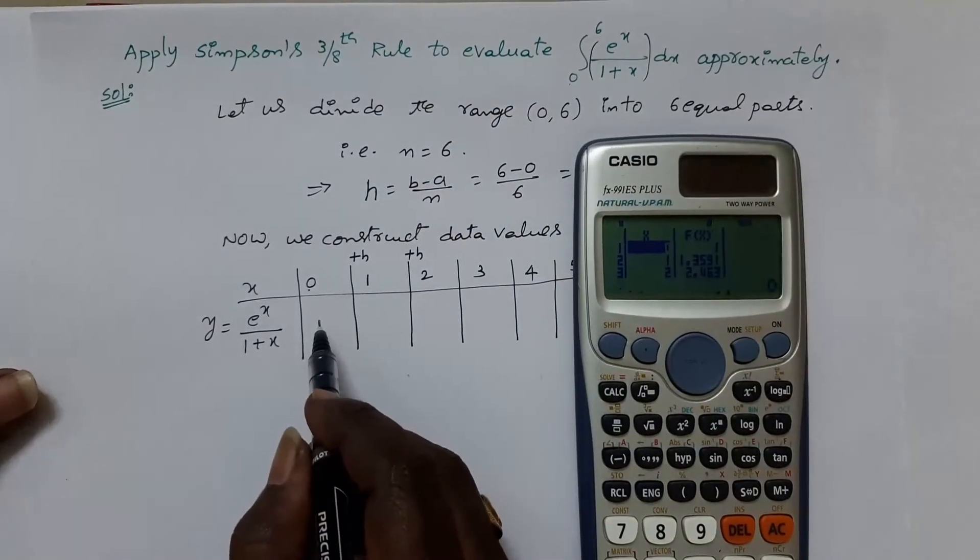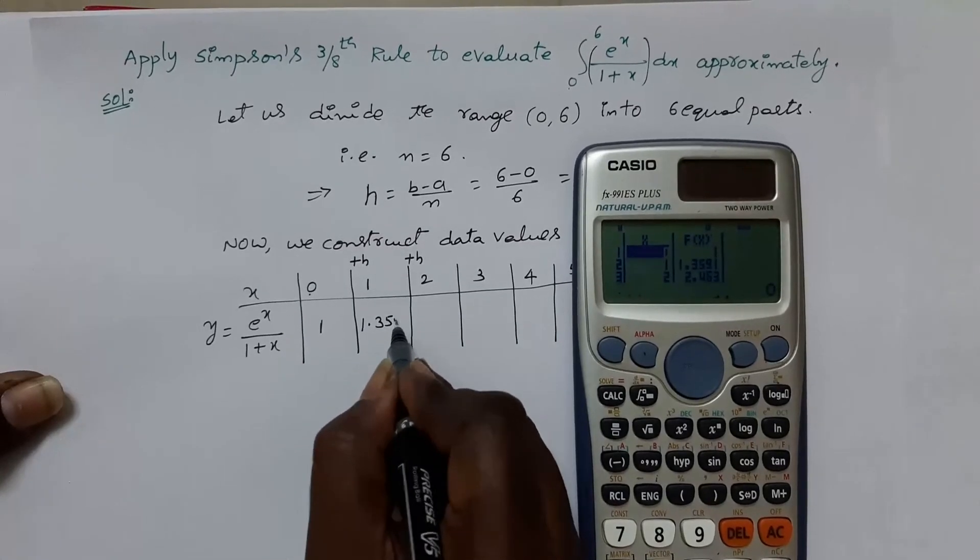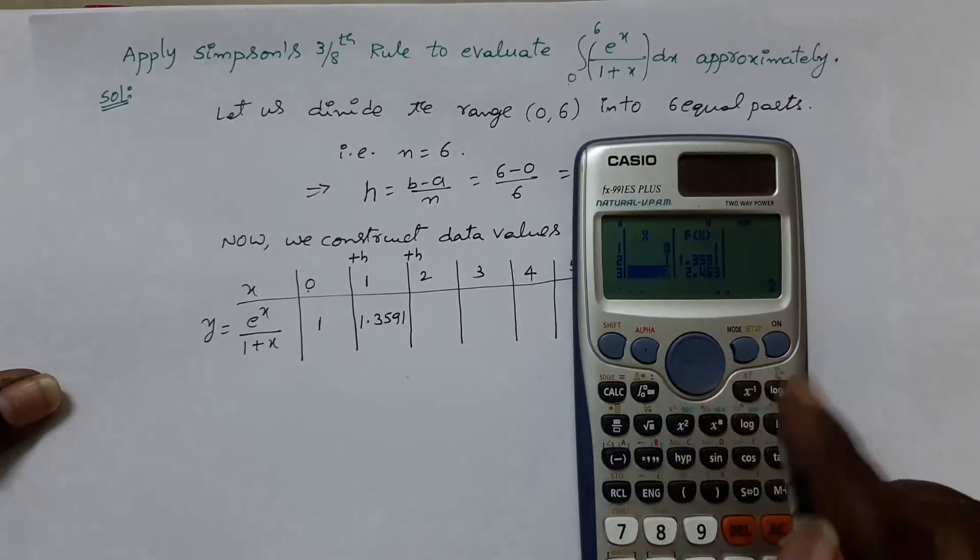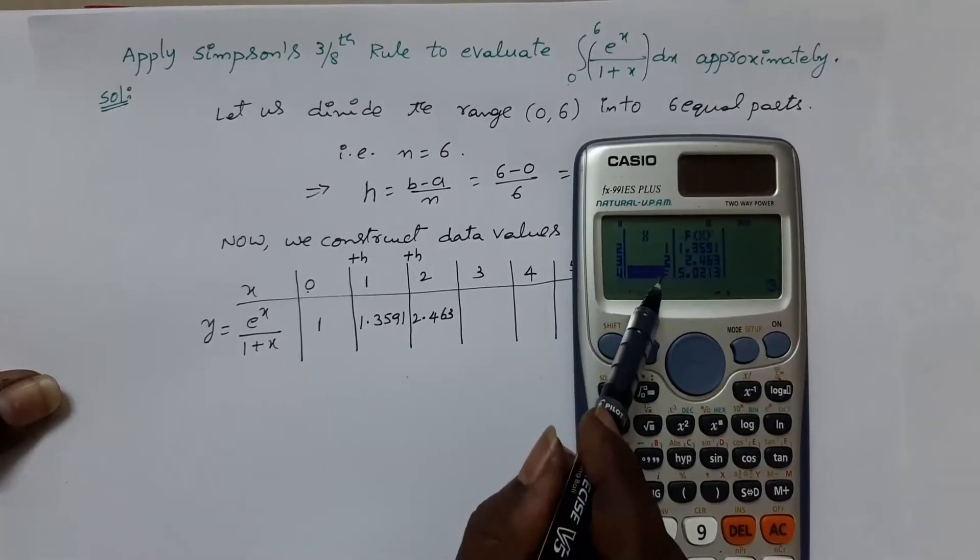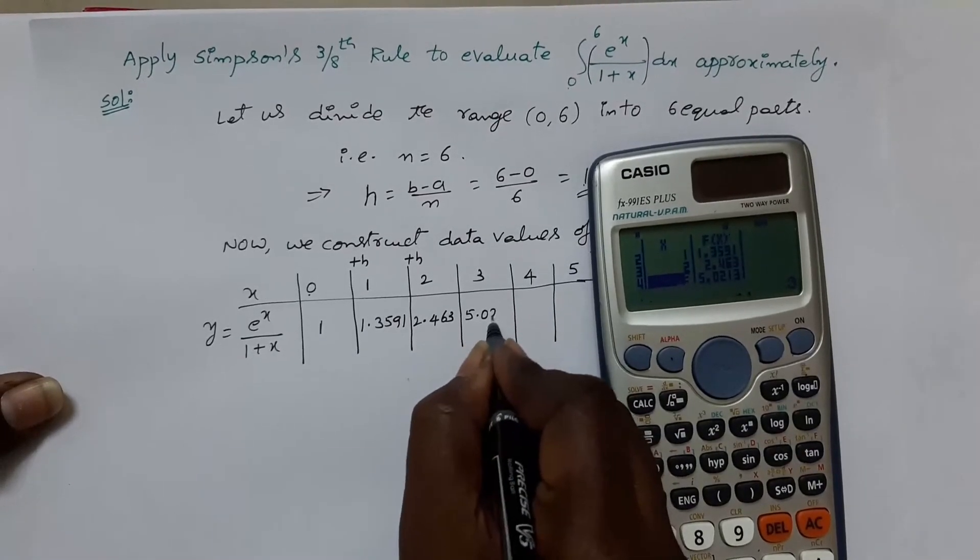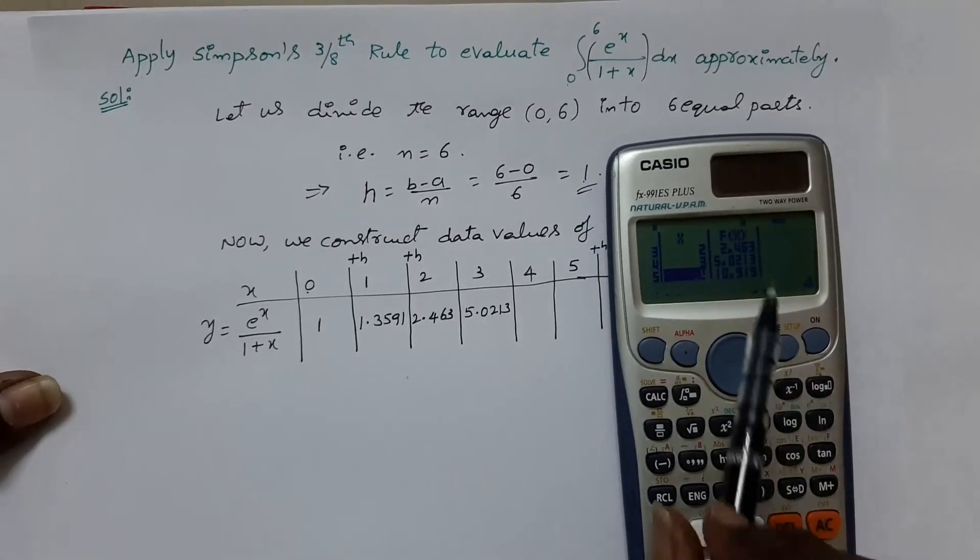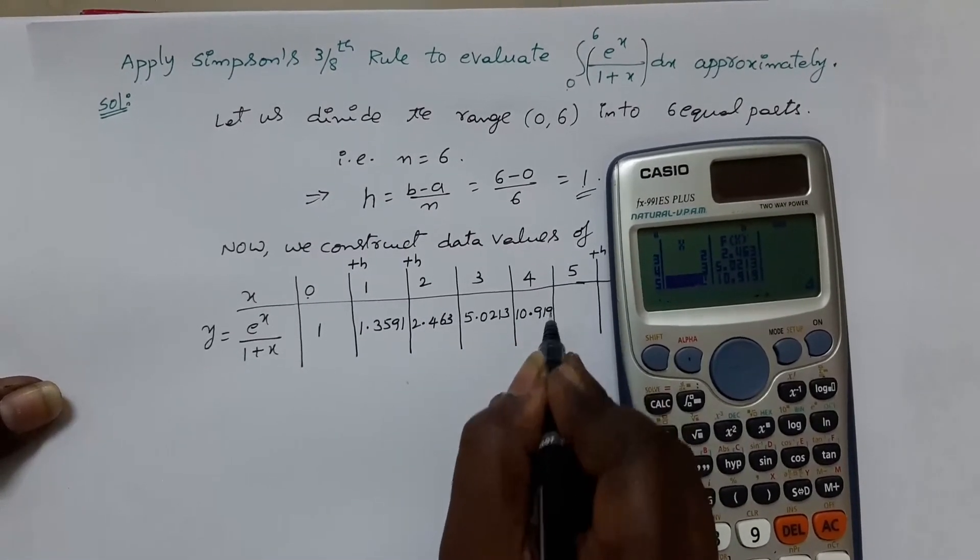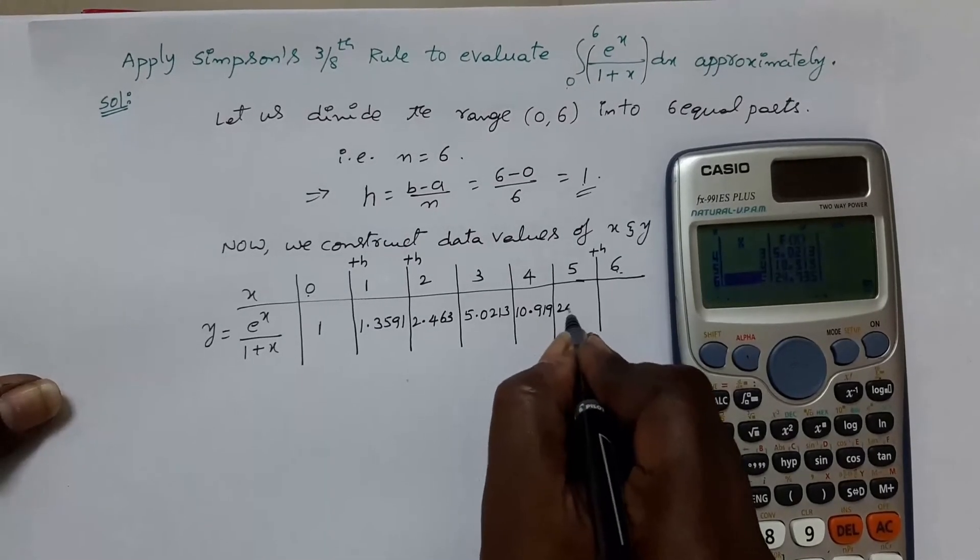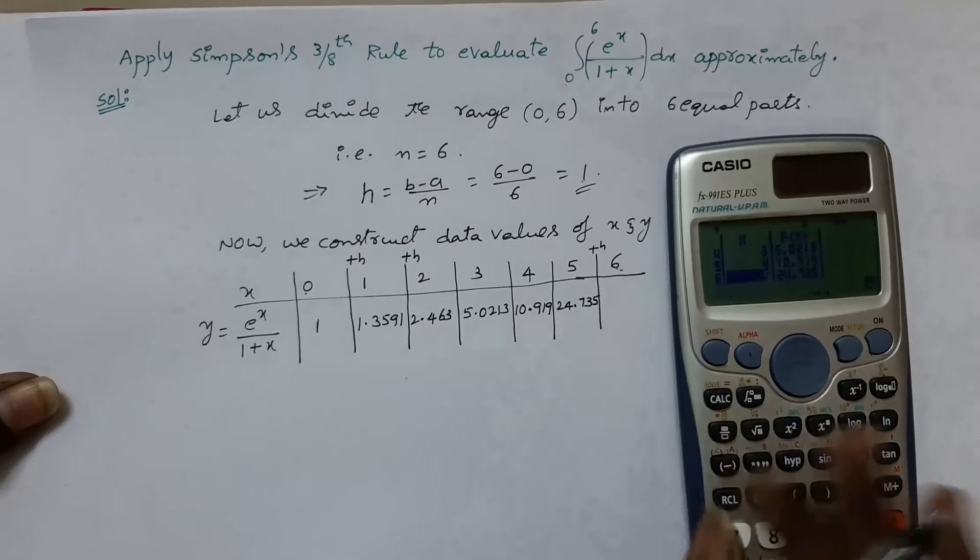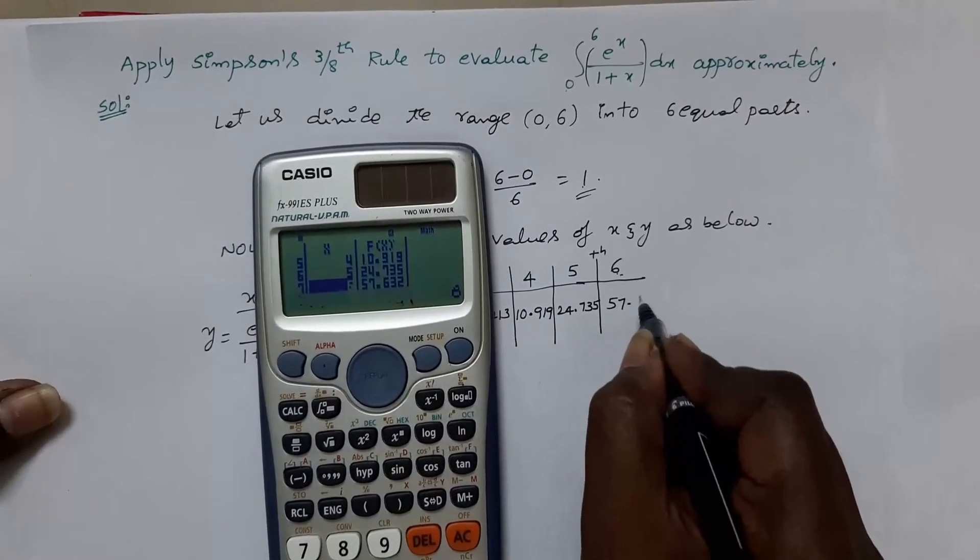First value is, at x is equal to 0, functioning value is 1. At x is equal to 1, functioning value is 1.3591. If x is equal to 2, then functioning value is 2.463. Scroll down. Functioning value at 3 is 5.0213. Again, scroll down. The functioning value at 4 is 10.919. Scroll down again. At x value 5, functioning value is 24.735. Finally, at 6, x value is 6 and functioning value is 57.632.